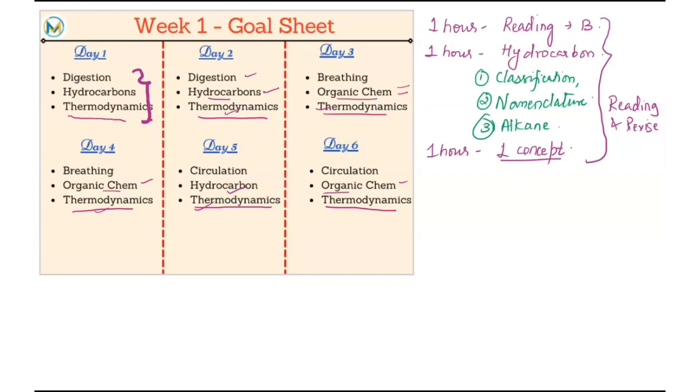The next thing we will do is MCQ solving. Fixed amount of MCQs: for bio we're doing 50 questions, for chemistry we will do 40 questions, and for physics we will do 10 questions. For digestion, which we're completing on day one, you will do 50 questions on the entire topic. Hydrocarbon - we decided we'll do three concepts every day, so you'll do 40 questions from those three concepts only. Physics - we decided we'll do one concept from thermodynamics every day, you'll do 10 questions from that one concept only.